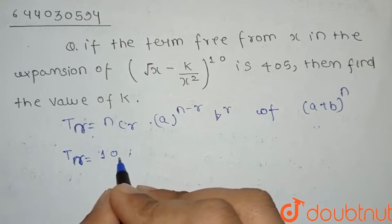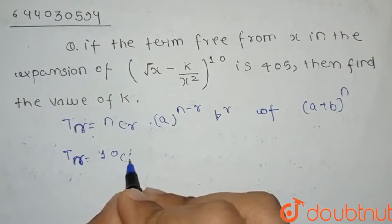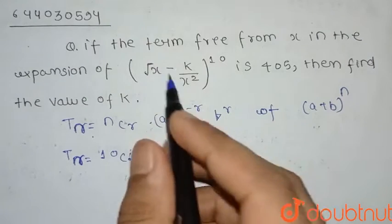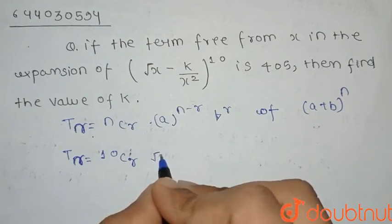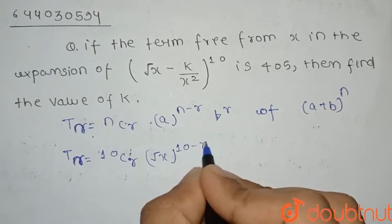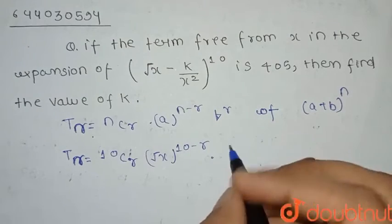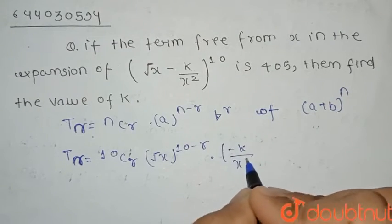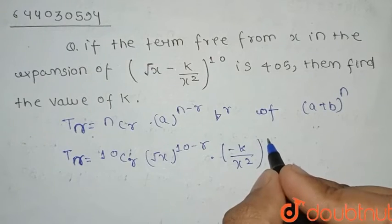Tᵣ will become ⁿCᵣ, that is n equal to 10, so ¹⁰Cᵣ. Here a is √x, so (√x)¹⁰⁻ʳ into, here b is -k/x², so (-k/x²)ʳ.